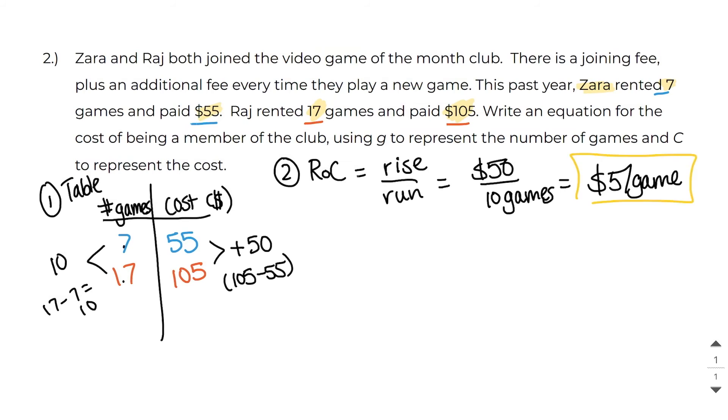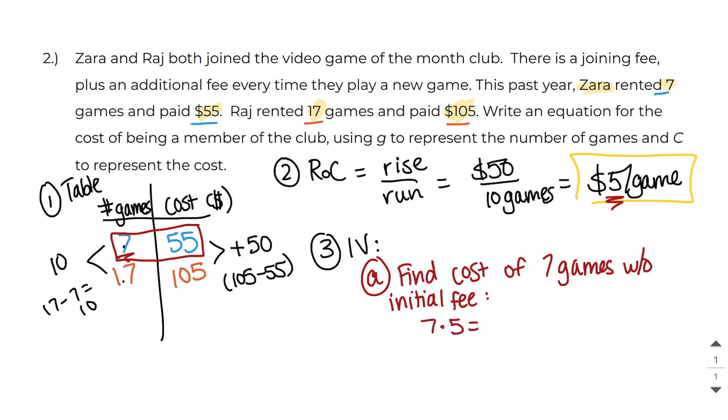Now we need to find our initial value. And to find our initial value, we need to choose one of our sets of points, either the 7, 55 or the 17, 105. I'm just going to use the 7, 55. And the first thing I want to do is find the cost of seven games without the initial fee. Well, if it's $5 per game, and we're going to rent seven games, then I would just multiply seven by five, which is $35.